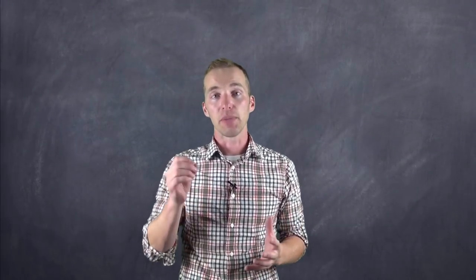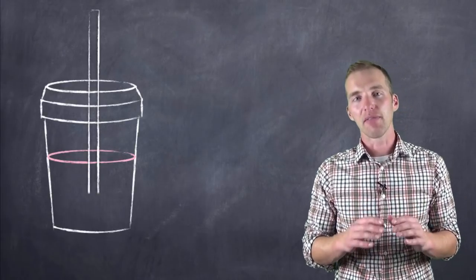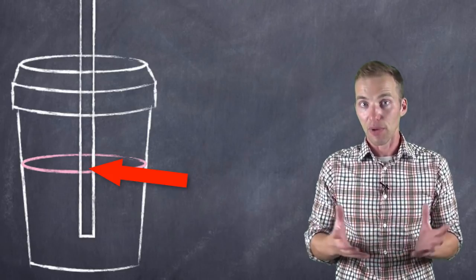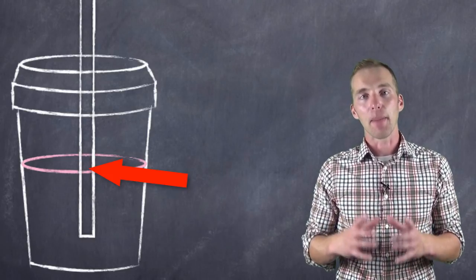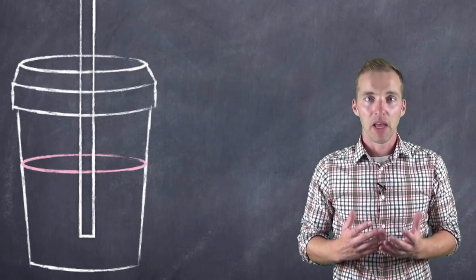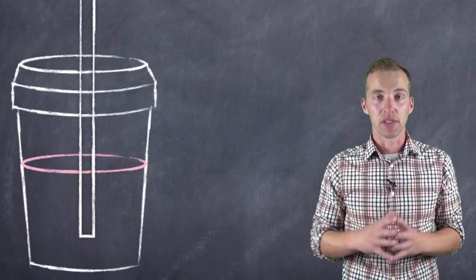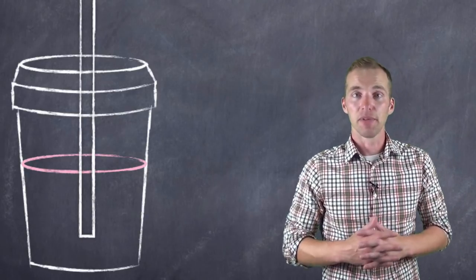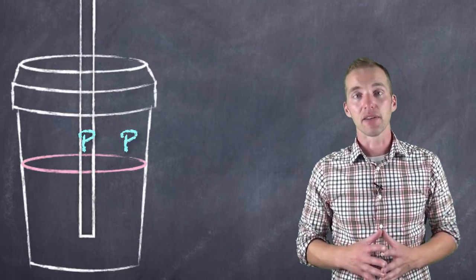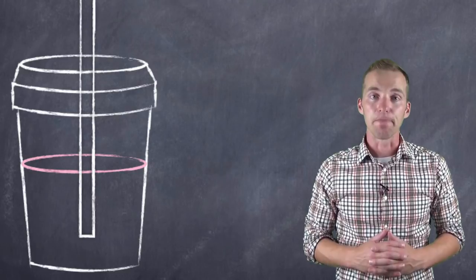If we think about a straw placed into a liquid and just left there, what you'll notice is that the level of liquid in the straw — our plastic cylinder — and in the cup that holds the liquid, those levels are going to be the same. The straw above that liquid level is filled with air, and the container is also filled with air; the air pressure inside the straw and inside the container is the same. So the liquid levels are equal.